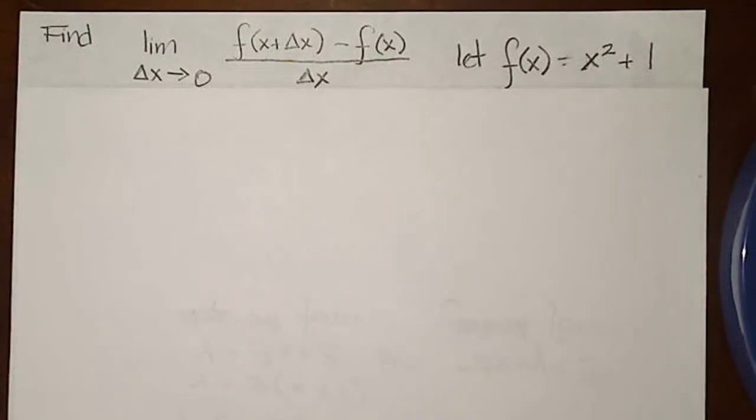For this problem, we are asked to find the limit as delta x goes to zero of f of x plus delta x minus f of x, all that over delta x, where we're going to let f of x equal x squared plus one.